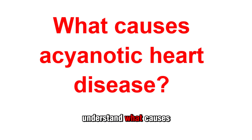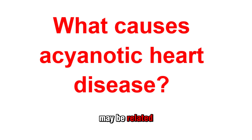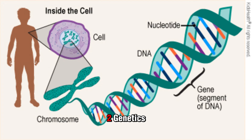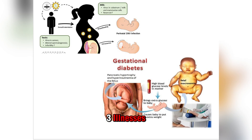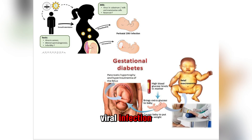Some evidence has shown that congenital heart defects may be related to: 1. Abnormal chromosomes, 2. Genetics, 3. Illnesses in the mother during pregnancy, such as diabetes, phenylketonuria, drug use, or viral infection.